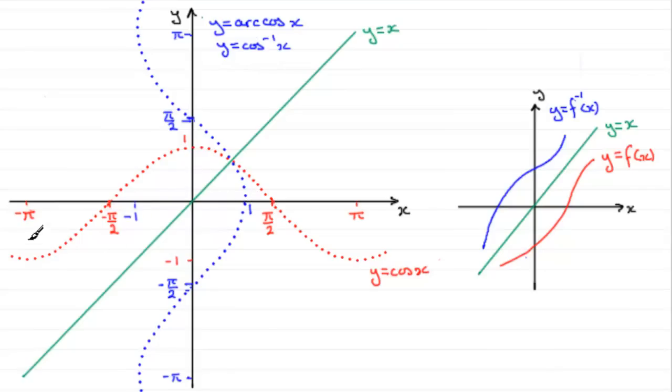Now, what we've got here is a function for cos x because for any value of x in the domain, there is just one value in the range.